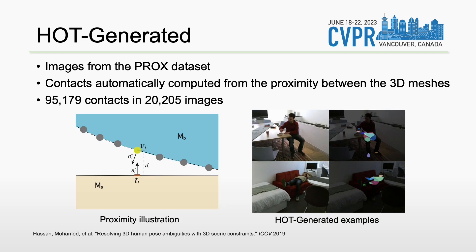For HOT-generated, we collect images from the PROX dataset, which contains 3D humans interacting with 3D scenes. For each frame, we calculate 3D human-to-scene mesh distances. All human vertices with distance below a threshold and with compatible normals are annotated as contact vertices. We render the contact vertices per body-part to get dense 2D contact areas.